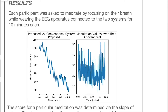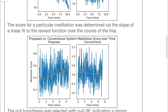To test the system, we were only able to use five participants due to COVID constraints. Each participant spent 10 minutes meditating with each system, with the modulation parameter, EEG band powers, and meditation scores recorded for the duration of each trial. To measure the effectiveness of each system, a linear fit was applied to the meditation score over time data. Here are some sample plots.